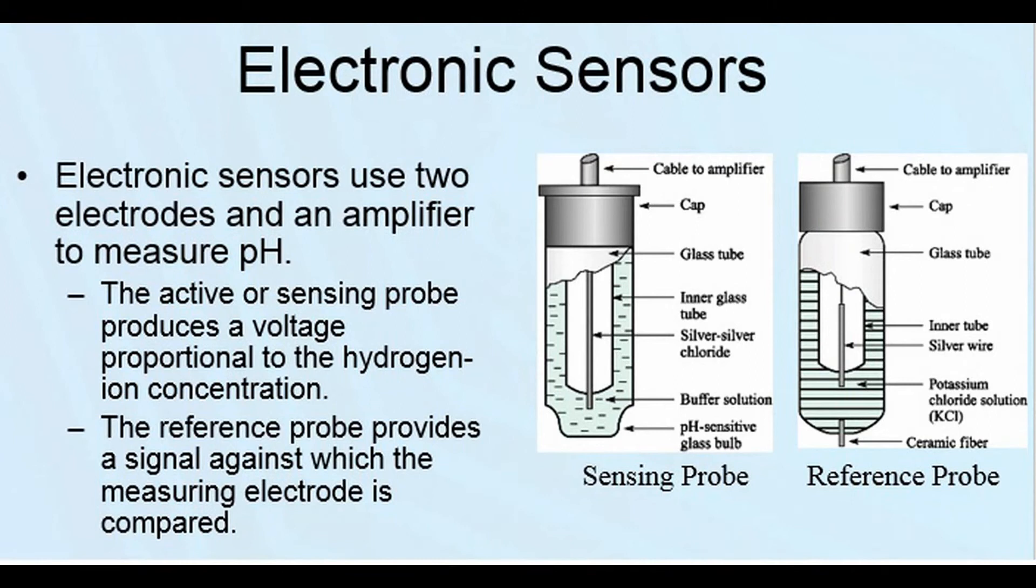Here's one method of measuring the pH of a solution, but it uses two sensors, a reference and the actual measuring probe, and both are inserted into the fluid that's being measured. The voltage produced by the circuit will change depending if something is more acidic or more alkaline. So you're not really measuring the pH, but you're measuring how much the voltage will change as a result of the different pHs.